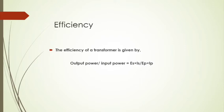The efficiency of a transformer is given by eta equal to output power divided by input power, that is ES multiplied by IS divided by EP multiplied by IP. For an ideal transformer, this efficiency eta equals 1, but for practical transformers, eta is less than 1.